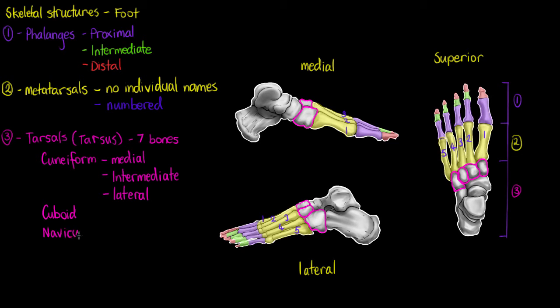Next we have our navicular. The navicular is a bone that's kind of in between everything else. We can see it here on the medial. We can also see it on the superior. And we'll also see it on the lateral. So it kind of separates all the other tarsals from each other.